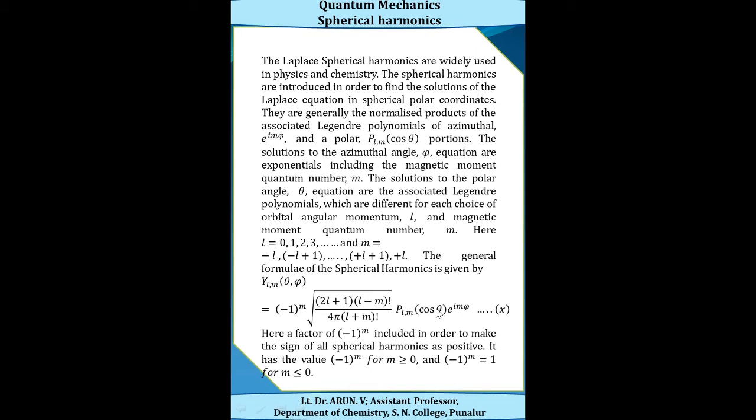The general formula of spherical harmonics is given by Y_l^m(θ, φ) = (−1)^m × √[(2l+1)(l−m)! / (4π(l+m)!)] × P_l^m(cosθ) × e^(imφ).